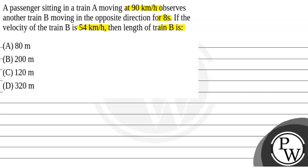So in the question, let's say this is train A and a person is in train A. Let's say this is a person. And this train is moving at 90 km per hour, and in the opposite direction a train is coming. This is train B, which is moving at 54 km per hour.